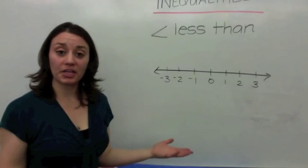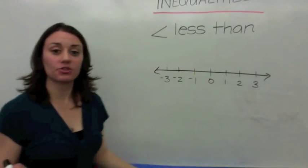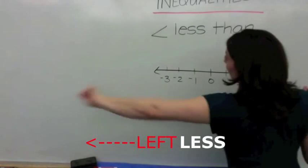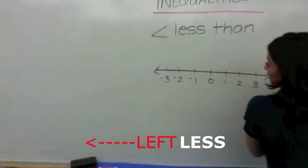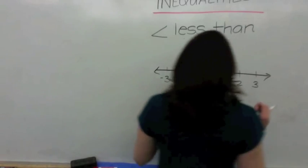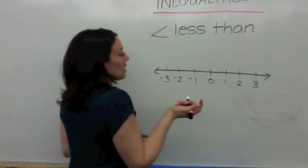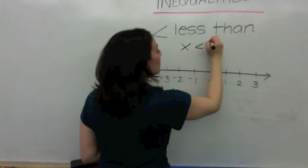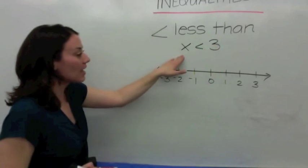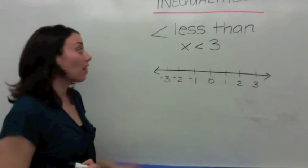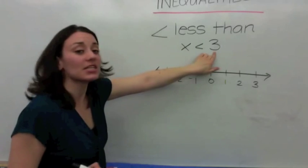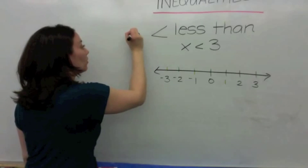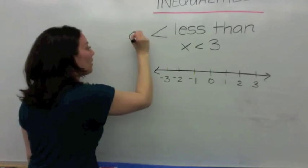The next inequality is less than. Repeat after me: less than. We know that everything that is less is to the left. If X is less than 3, then less than means it does not include 3. So you have to draw an open circle on the number line.